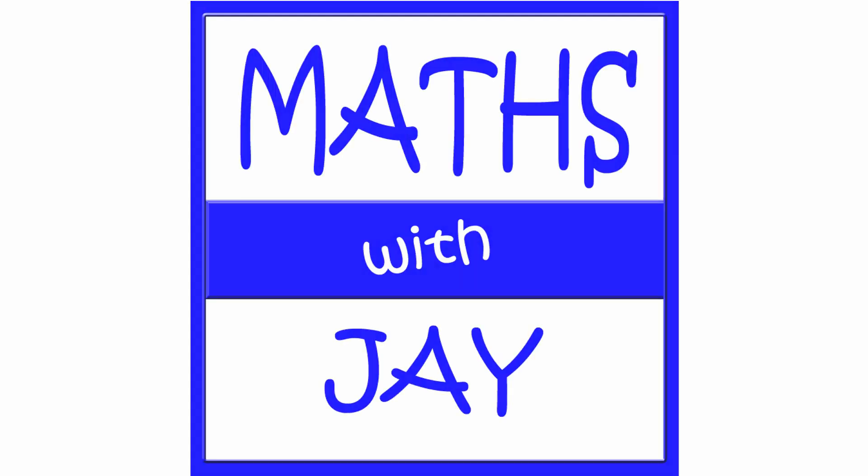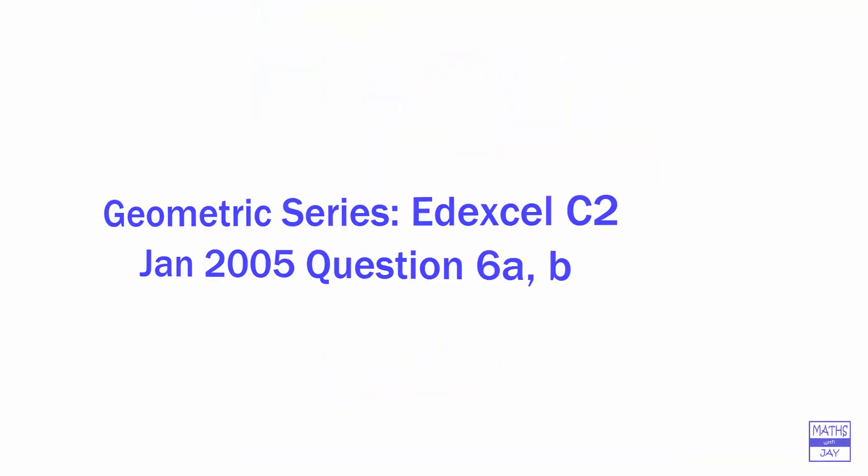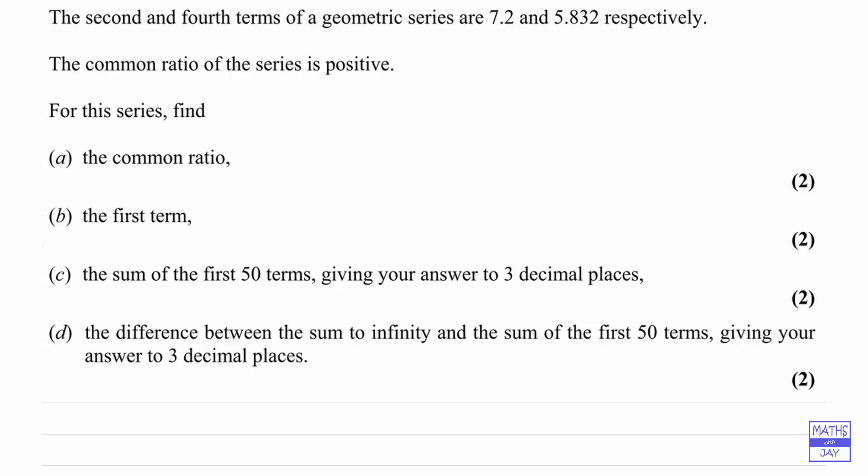Hello, welcome to Maths with Jay. In this question we're looking at a geometric progression. We're given two terms of the series or sequence and we're going to start off by finding the common ratio and the first term. Let's give ourselves some more space.